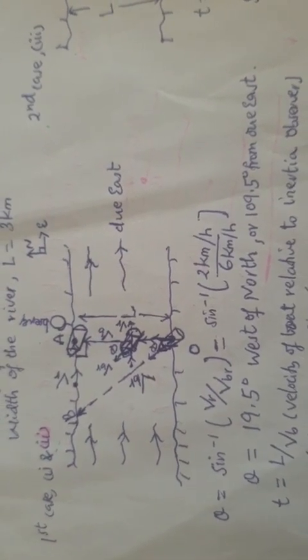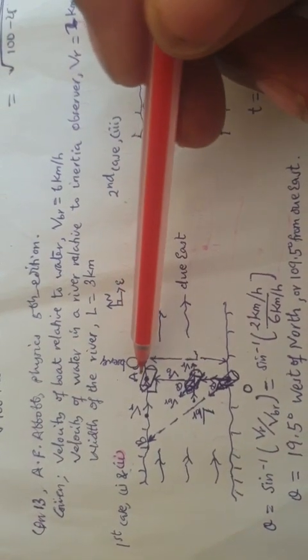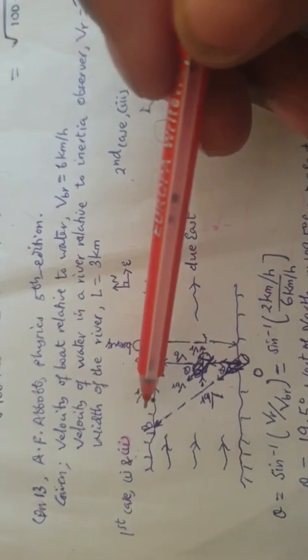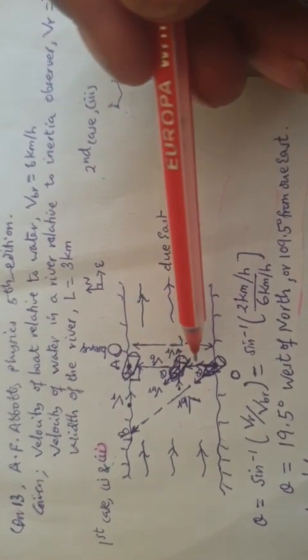If the ferryman wants to head to the destination A, he must point the head of the boat's nose towards point B at a certain angle theta. The ferryman must calculate first the angle theta before he starts his journey towards destination A.